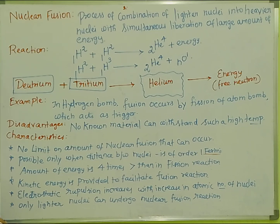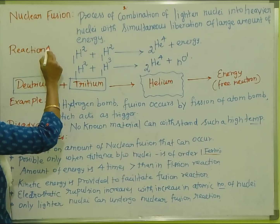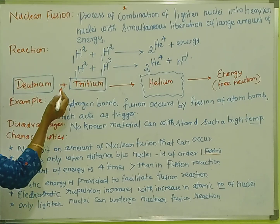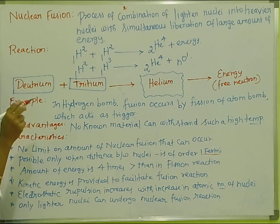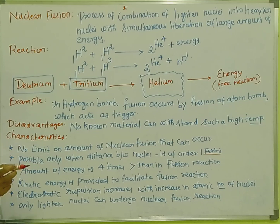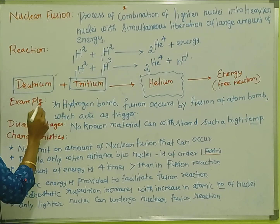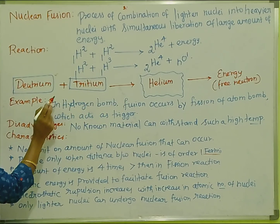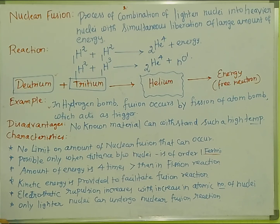These are the characteristics of the fusion reaction. First, the fusion reaction occurs in the sun — that is the hydrogen thermonuclear reaction. Second, this is a thermonuclear reaction. Third, the hydrogen bomb is an example of the fusion reaction, where fission of an atom bomb acts as a trigger. These are the key characteristics of nuclear fusion.